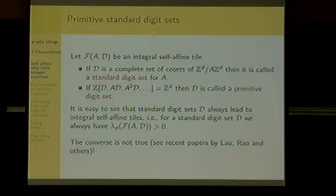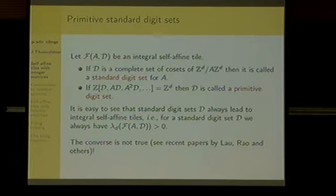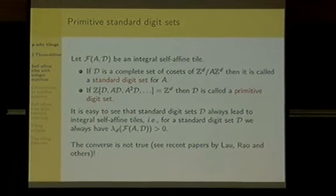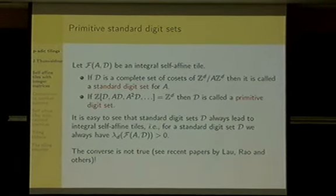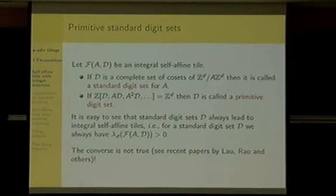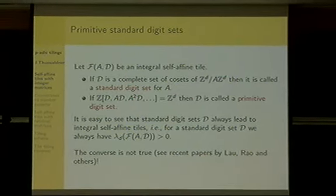What is easy to see is that standard digit sets always lead to positively big measure. However, interestingly, the converse is not true, and it is a quite difficult problem to characterize all possible digit sets for a given matrix. In the one-dimensional case, this is non-trivial. For one-by-one matrices with prime entries, this was settled a long time ago. Also for prime powers, it is known. It is more difficult if you take numbers composed of two primes. This has been settled by Kassing Lau from Hong Kong and Rao Hui from Wuhan, and they continue to work on characterizing digit sets in the one-dimensional case.